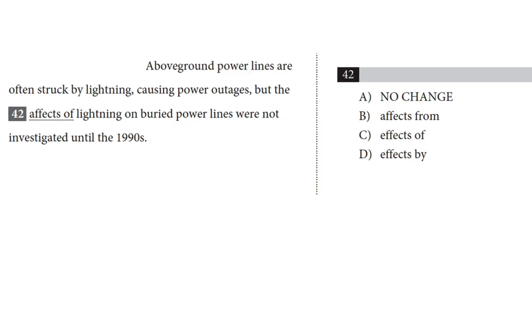Let's get going on question 42. This is from a passage about fulgurites, also known as petrified lightning. Above-ground power lines are often struck by lightning, causing power outages, but the affects of lightning on buried power lines went uninvestigated until the 1990s.